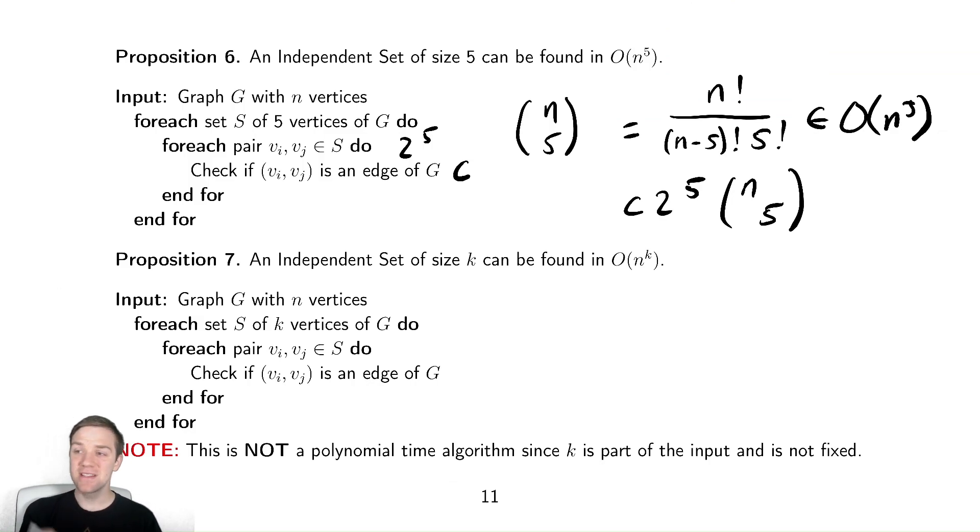But notice the independent set did not have a fixed value. It had a K, and we want to determine if this is an independent set of size K for any K. K is part of the input. Therefore, big O of n to the K is actually a deplorable runtime because it's exponential in our input, which is K.